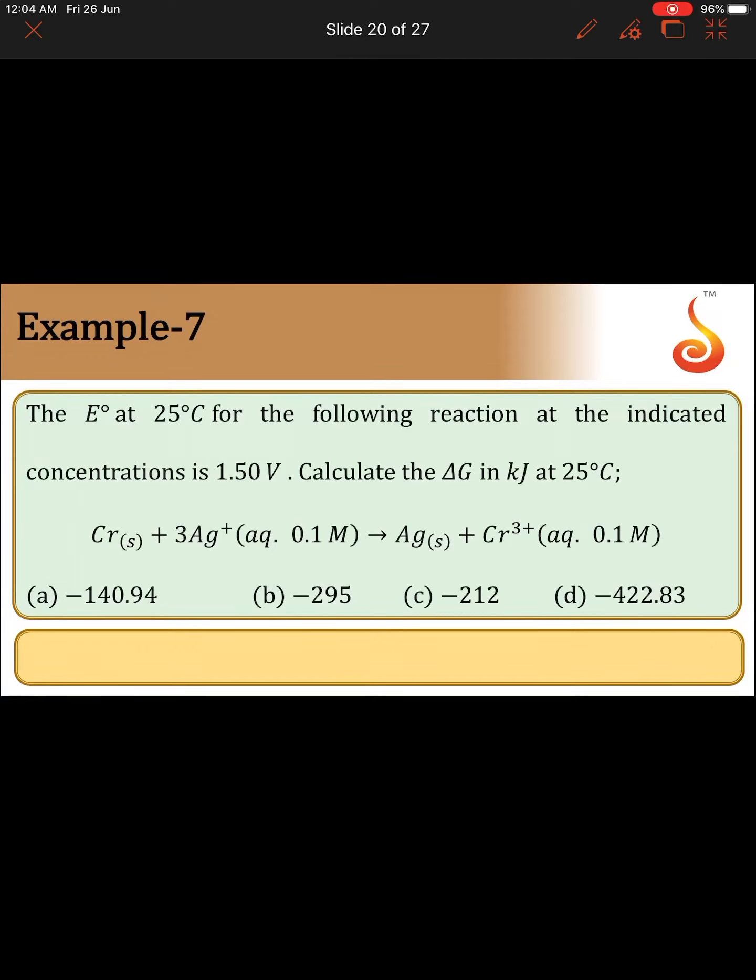The E0 at 25 degrees Celsius for the following reaction at the indicated concentrations is 1.50 volts. Calculate the delta G in kilojoules at 25 degrees Celsius.